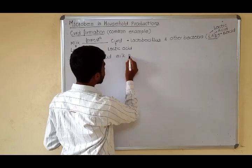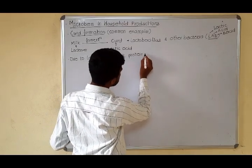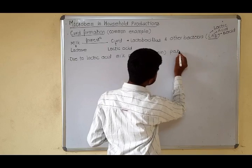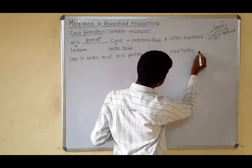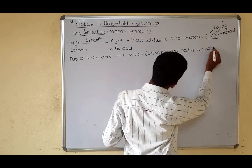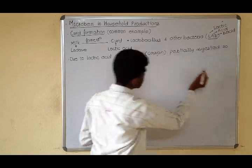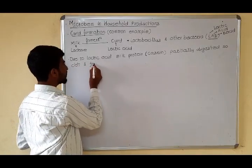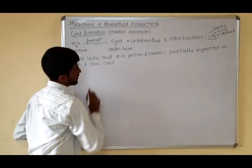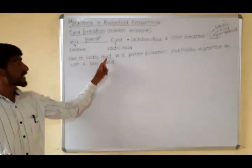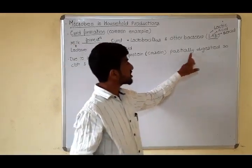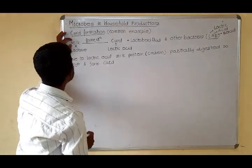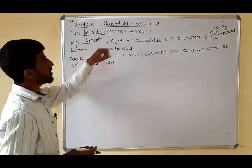Due to lactic acid, milk protein — that is casein — is partially digested, causing it to clot and form curd. So due to lactic acid, the milk protein is partially digested, causing it to clot and form curd — meaning the liquid form of milk is converted into the semi-solid form of curd.